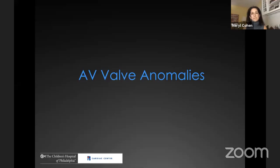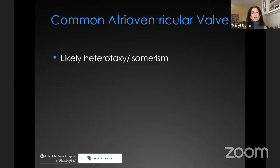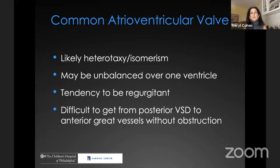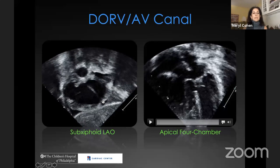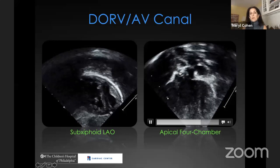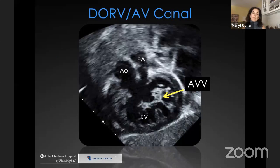There are AV valve anomalies highly associated with double outlet right ventricle. A common AV valve, likely seen in heterotaxy or isomerism, may be unbalanced over one ventricle, has a tendency to be regurgitant, and it is very difficult to get the posterior VSD to an anterior great vessel without obstruction. Here is an example of a common AV valve with both great arteries sitting entirely over the right ventricle in a patient with heterotaxy syndrome — trying to reach a great artery without causing AV valve damage would be quite challenging.